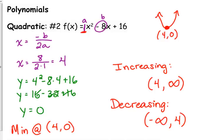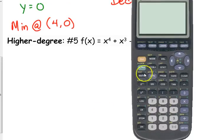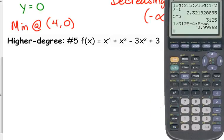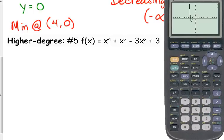Looking at the coefficient of A, we can determine whether it's facing up or down. If we're looking at something like number 5 that's of a higher degree, we cannot do it by hand. We have to rely on our calculator for this one. This one has three relative extrema.